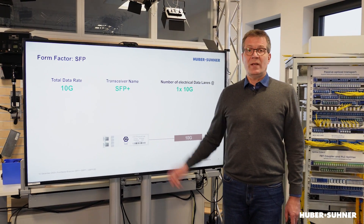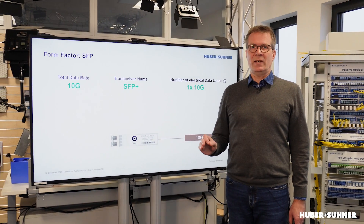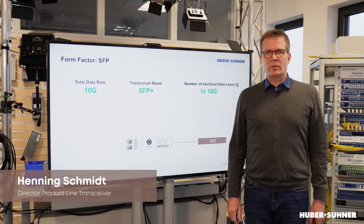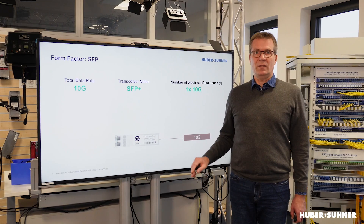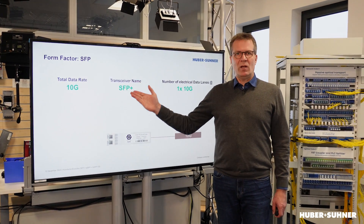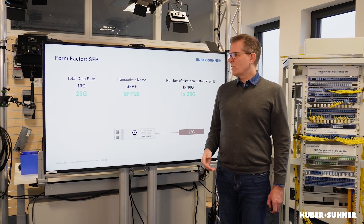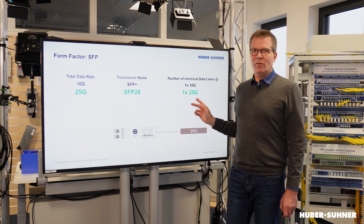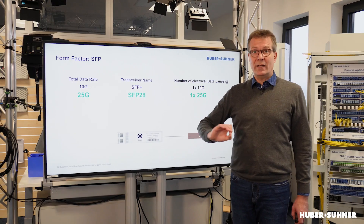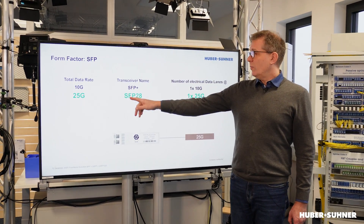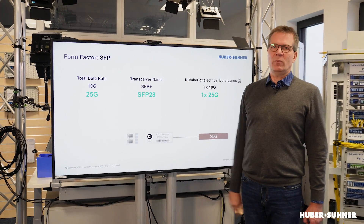It all started with SFP, which had been introduced for 1 Gbps as a data rate. But soon it became possible to transmit 10 Gbps over the same physical design — this is when the term SFP Plus had been introduced. And then later it became possible to run even higher data rates, such as 25 Gbps, still over the same physical design, which is one single electrical lane. The term is SFP28, because there's a little bit of overhead, but the data rate is actually 25 Gbps net.